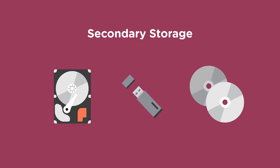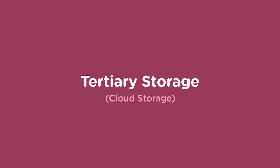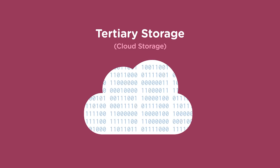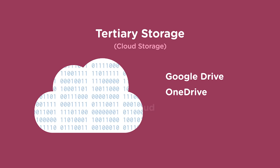Tertiary storage is also known as cloud storage, meaning the data is stored somewhere different from your physical location. Examples of cloud storage include Google Drive, OneDrive by Microsoft, iCloud by Apple, and Amazon Web Services or AWS. If you use any of these services, you're saving data in the cloud.